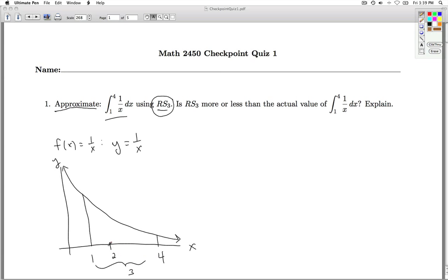So if I chop it up into three equal pieces, each piece is one unit long. So the first interval is going to go from 1 to 2, and then from 2 to 3, and finally from 3 to 4. So these are the three subintervals.